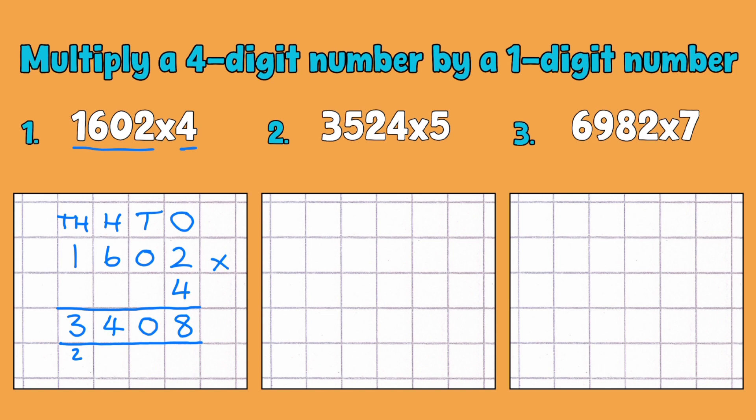So the same thing for my next example. 3,524 multiplied by 5. If you want to, if you're following along, then put your place value headings if you feel like it will help you. So I'm going to write in my number 3,524 multiplied by 5. And my answer sign in there, my huge equal sign.